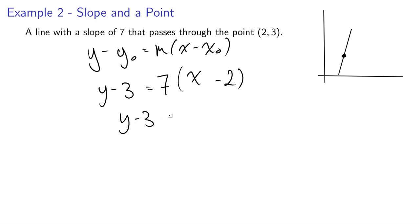Here we're going to do the same algebra. We're going to distribute the 7: y - 3 = 7x - 14. And then finally, y = 7x minus 11. Again, down to that form we wanted.